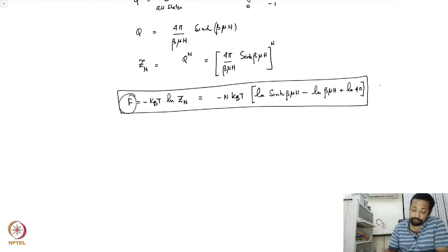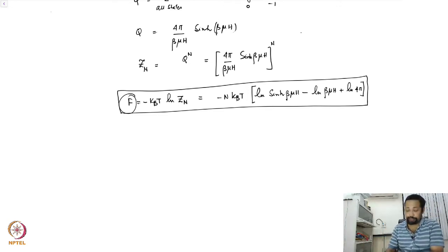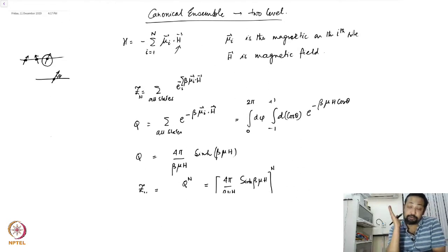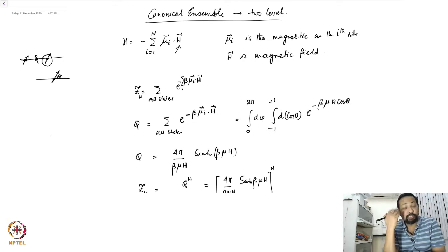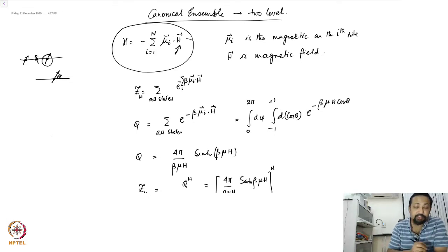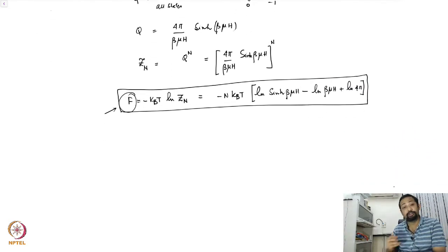With the free energy F from the N-particle partition function, we would like to proceed further, but there is a word of caution here. If you identify this with the Helmholtz free energy — even though I am using the notation F — you will be in trouble, because in thermodynamics the Helmholtz free energy is defined in the presence of no mechanical work. On the other hand, the Gibbs free energy is defined in the presence of a constant mechanical force. Looking at the Hamiltonian, you see the magnetic field has already been applied, so there is a presence of a constant magnetic field.